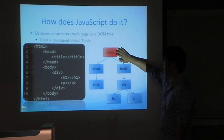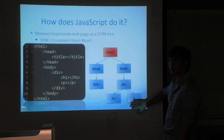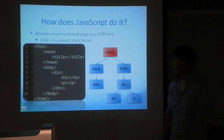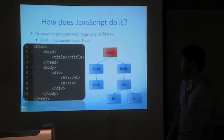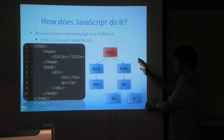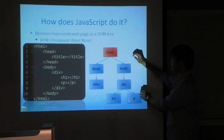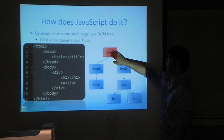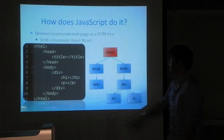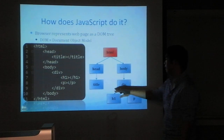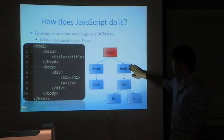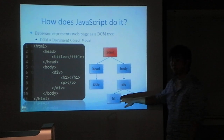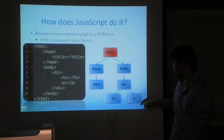Visually, what JavaScript does is create this tree structure based on the example HTML. It starts at the top where you have the HTML parent, then it has a head and body — a title for the head, and within the body we have a div, a header, and a paragraph.